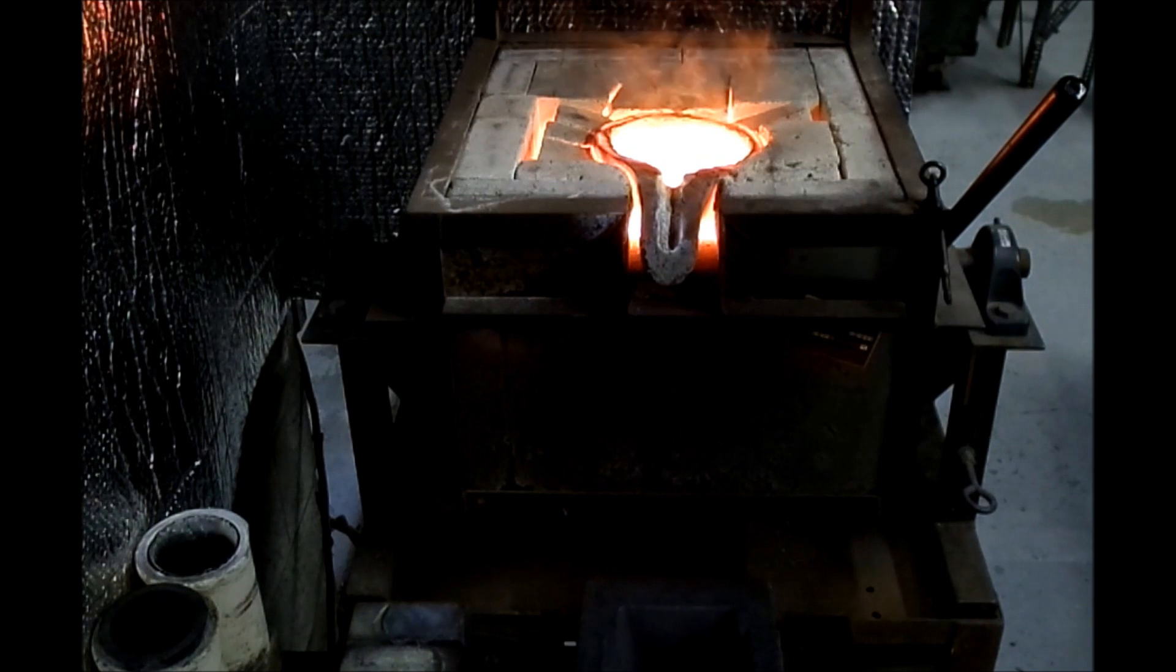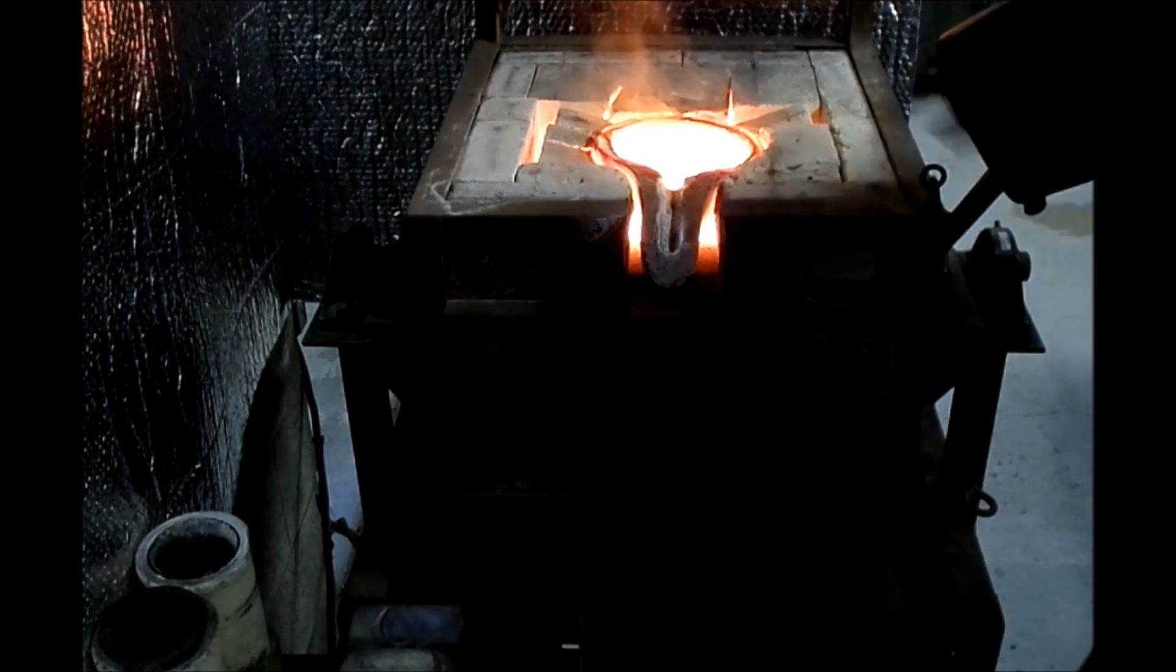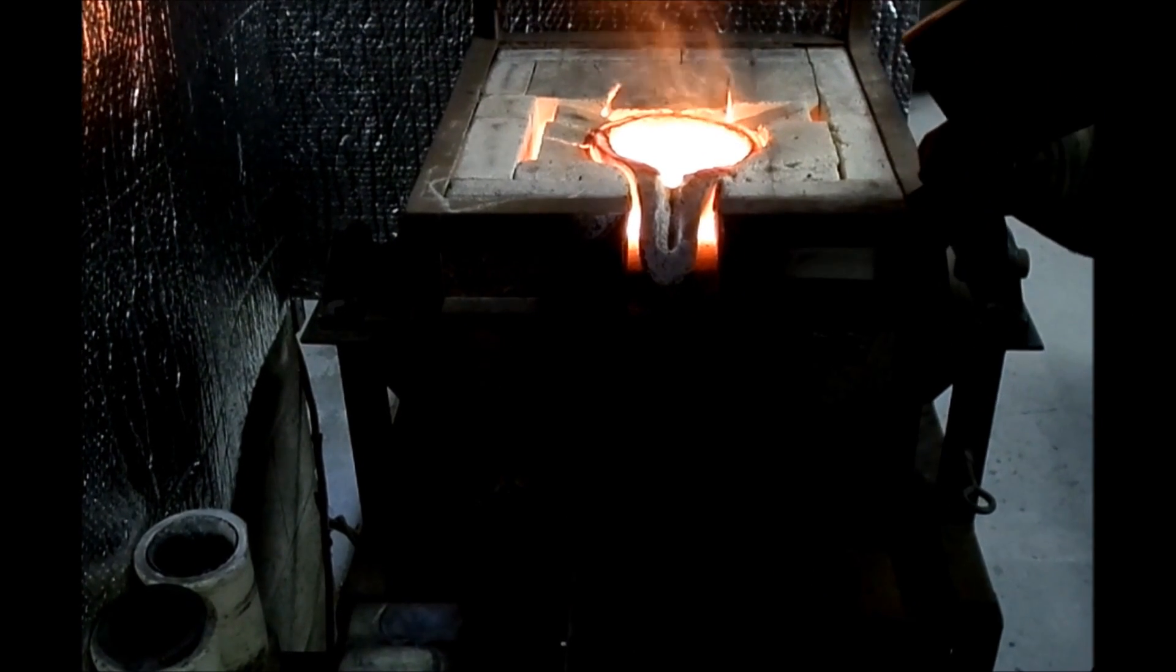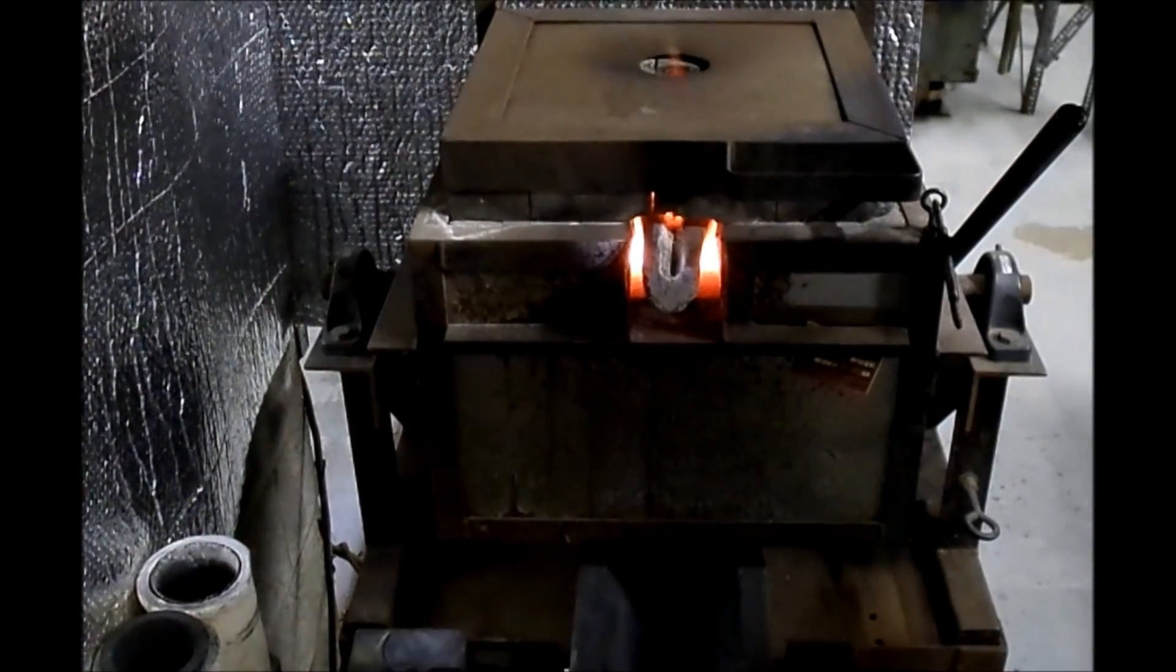Having set the sample aside to cool, we double check the positioning of a preheated ingot mold to ensure we're safely pouring the molten silver. With the ingot mold in the correct location, we are finally ready to pour.